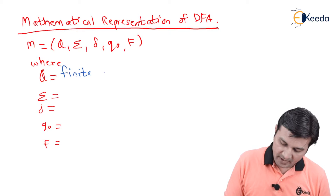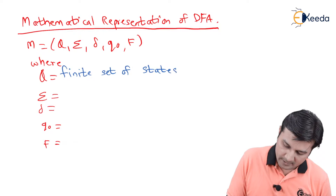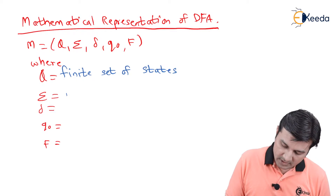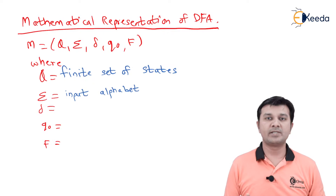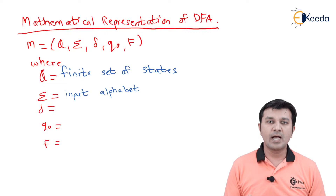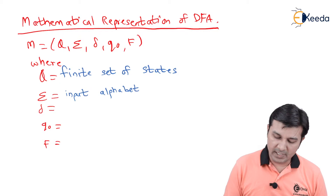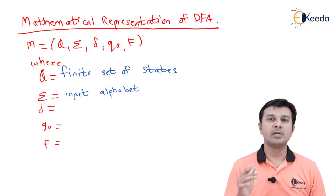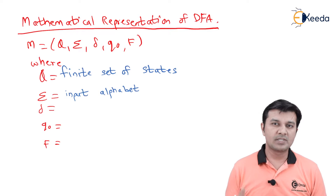Here Q is the finite set of states, and Σ is called the input alphabet. For example, if I am talking of divisibility by three, the set of states will be Q0, Q1, Q2, and the input alphabet will be 0, 1, 2, 3, up to 9 because we are talking of decimal numbers.